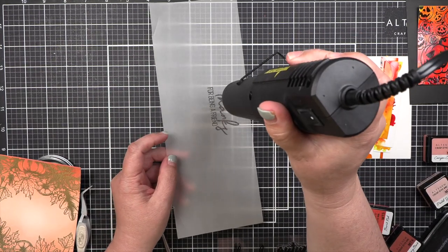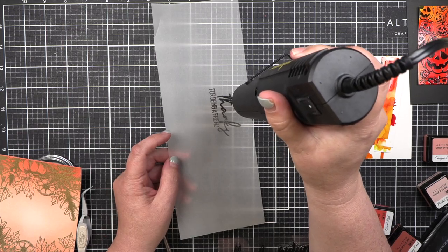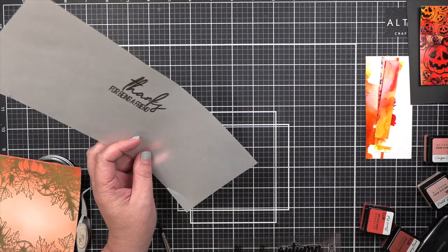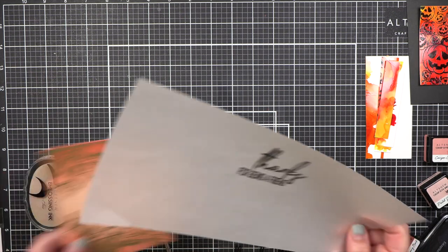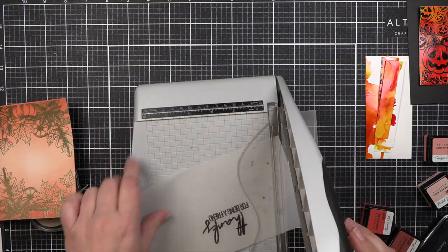After I heat this up, you'll see that the panel is just too big obviously for the card. So what I've done is I've cut that down so it will be a belly band.